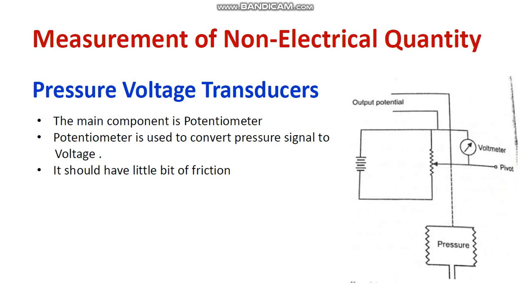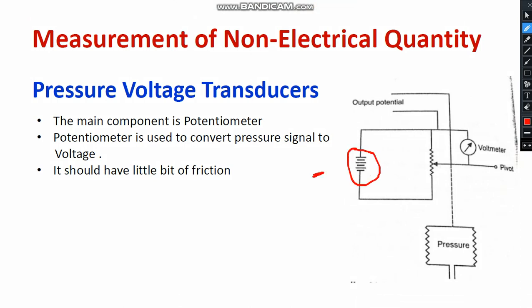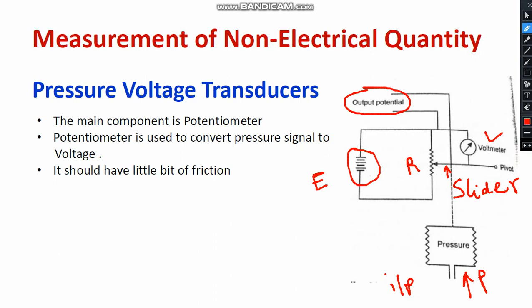Next, we will discuss pressure measurement using a voltage transducer. We have a battery or EMF source, a slider, a resistive element, and a moving coil voltmeter. We apply pressure externally over the bellows. Whenever we apply force or pressure in a particular area, the slider position changes. With respect to the position of the slider — it acts as a potential divider — the value of voltage changes. Based on the variation of the slider, the output potential changes. So pressure is the input and the output is the EMF. This is how the pressure voltage transducer operates.